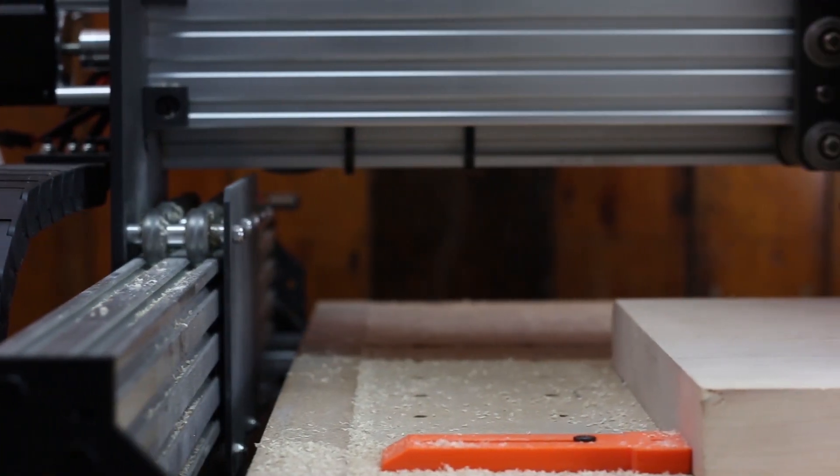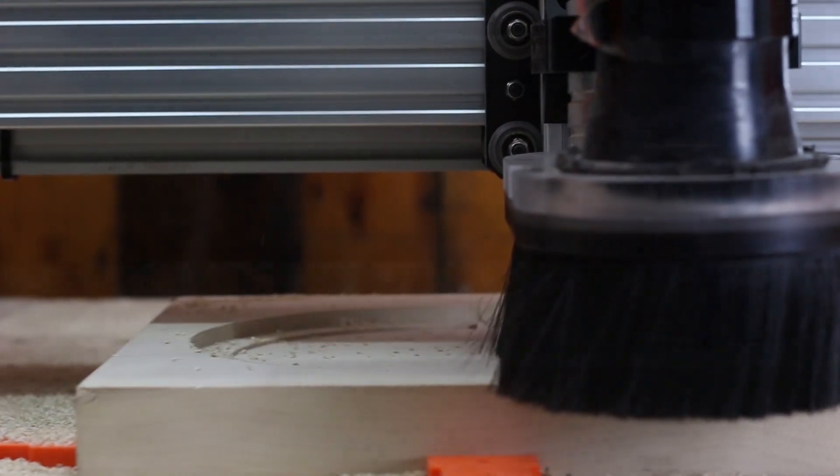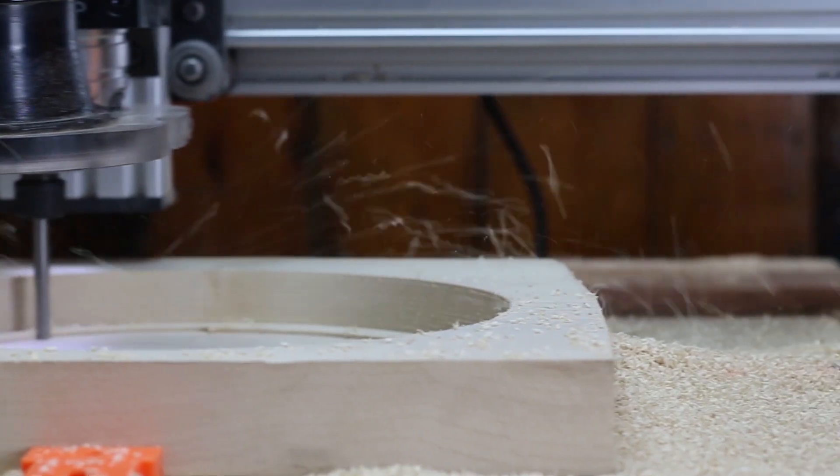We're running the machine at 27k RPM with a 2mm pass depth, 1,800mm per minute for the feed rate, and 1,000mm per minute for the plunge.